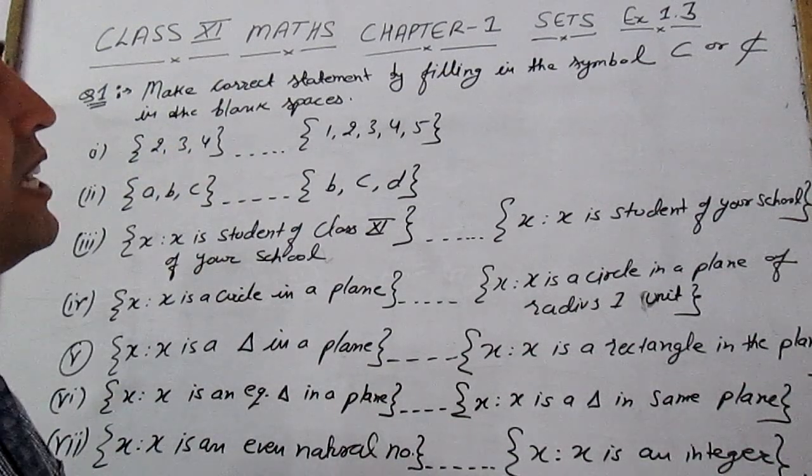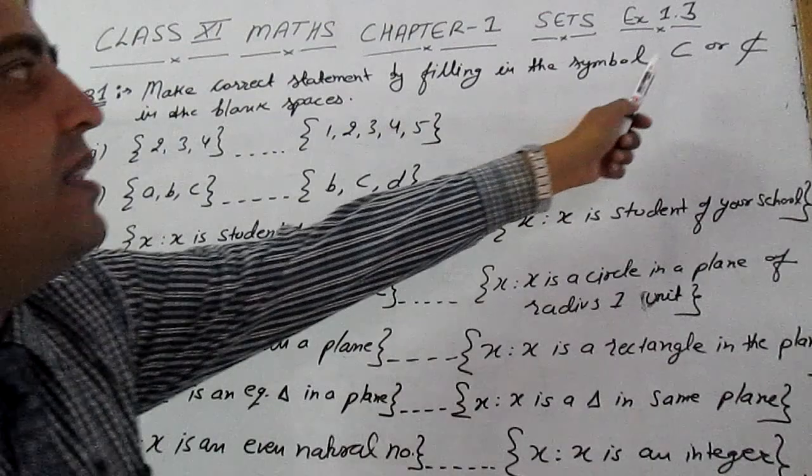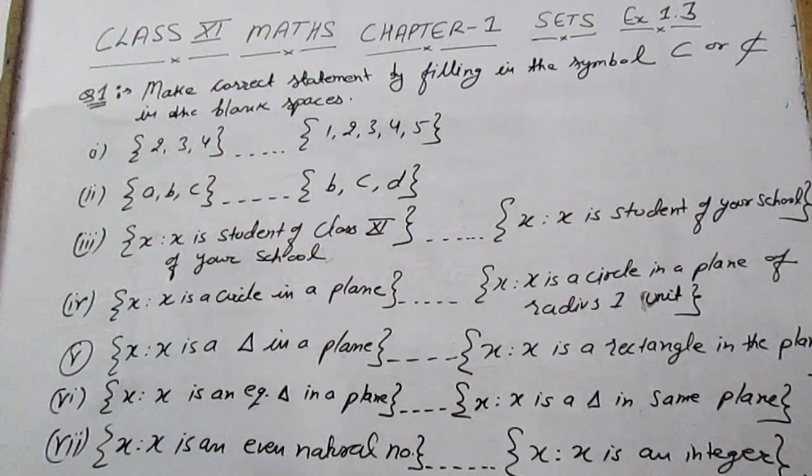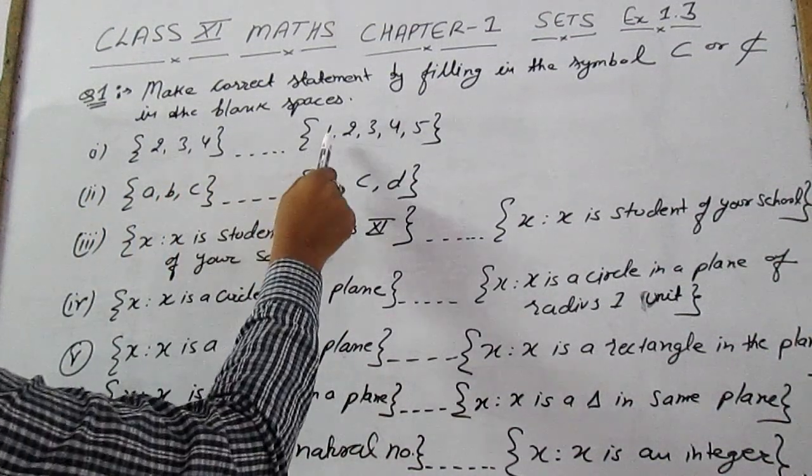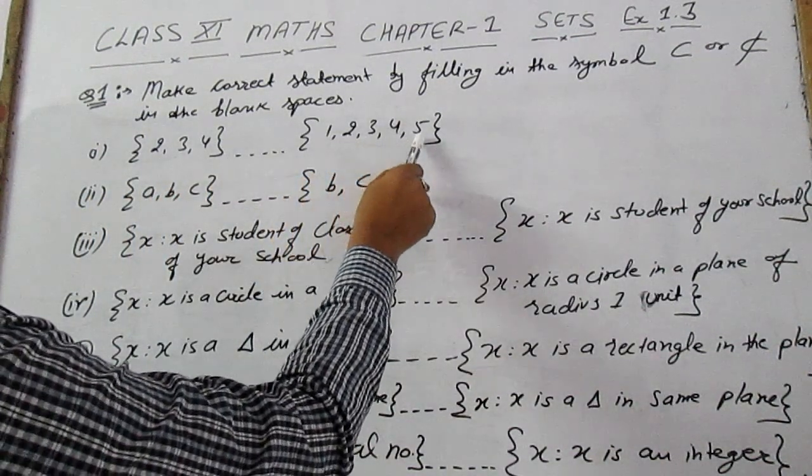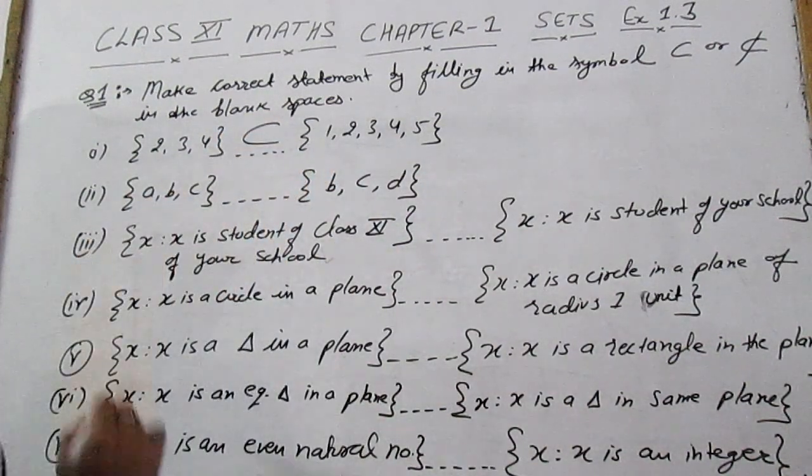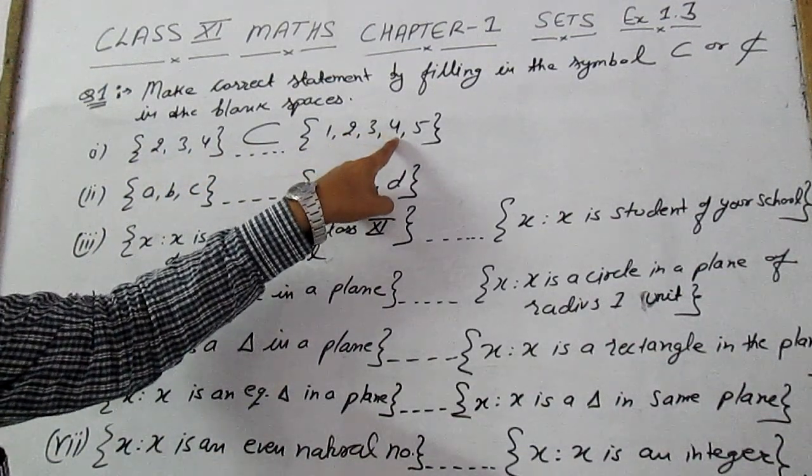First question, Exercise 1.3: Correct the statement by filling in the symbol subset or not a subset in the blank space. Let's see the first part. Elements are 2, 3, 4, and here elements are 1, 2, 3, 4, 5. Clearly it is a subset of the set because 2, 3, 4—all three elements are present in the second set.